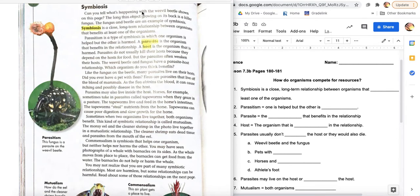Can you tell what's happening in the weevil beetle shown on this page? The long, thin object growing on its back is a killer fungus. The fungus and beetle are an example of symbiosis. Symbiosis is a close, long-term relationship between organisms that benefits at least one of the organisms.